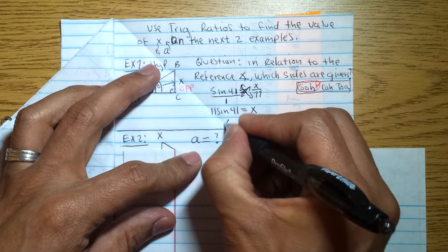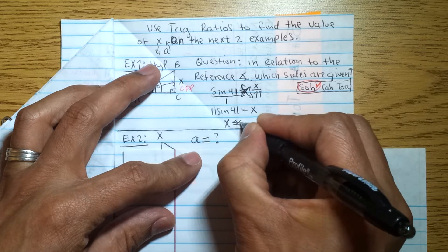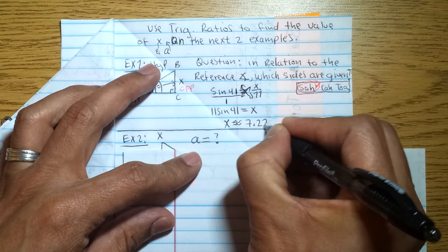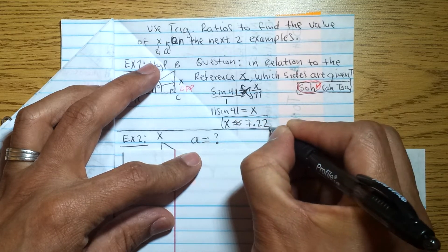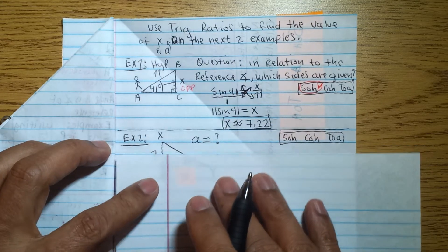So we know X equals, or it's approximately 7.22, so two decimal places. That's the value of X. Now, the next example.